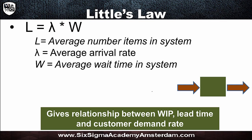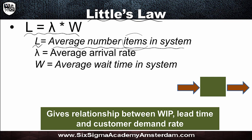This is Little's Law — a simple function consisting of just a few terms. It gives us L, the average number of items in a system. That system could be a restaurant, a factory, a plane, or whatever. L is a function of lambda, the average arrival rate of items into the system, and W, the average wait time in the system for those units of input.